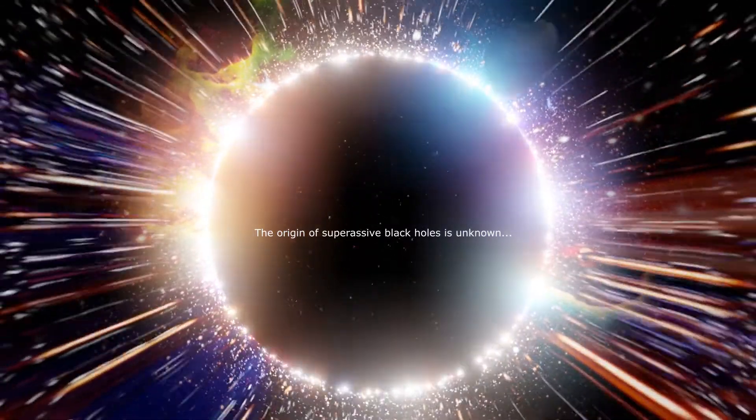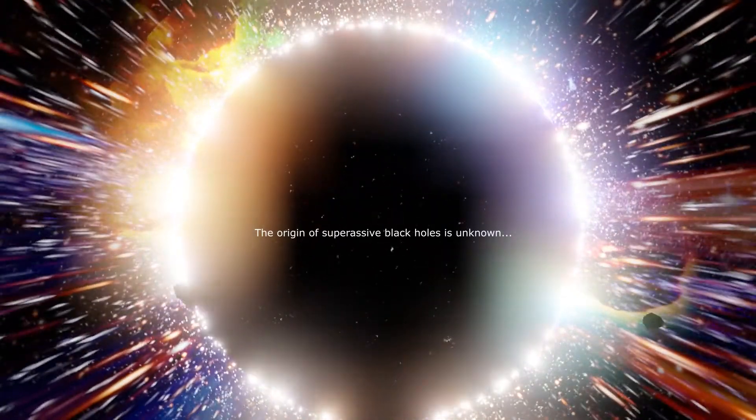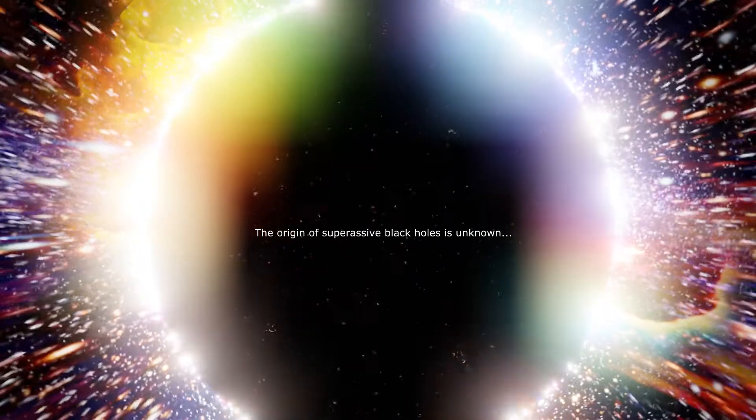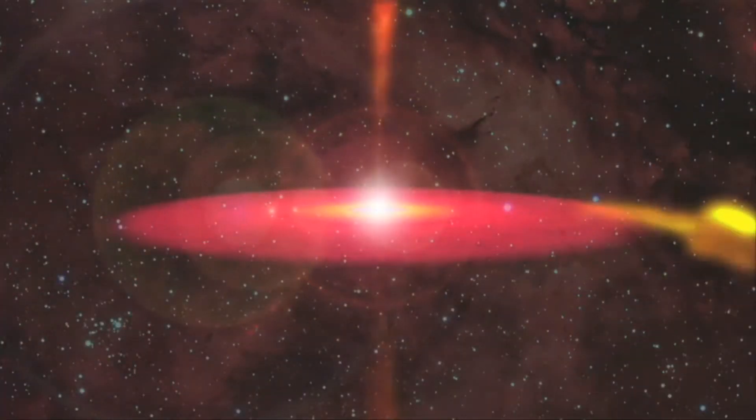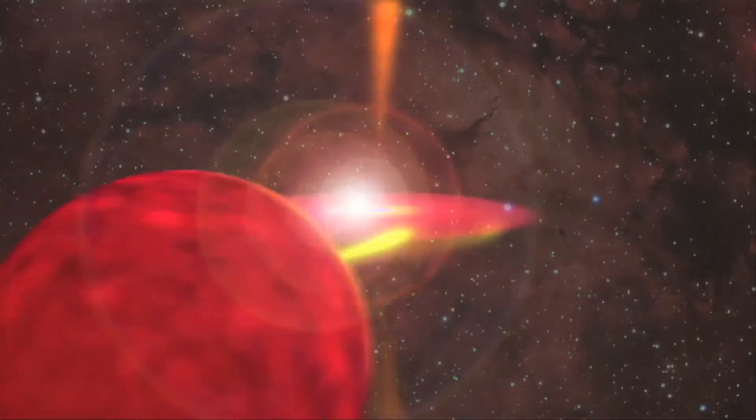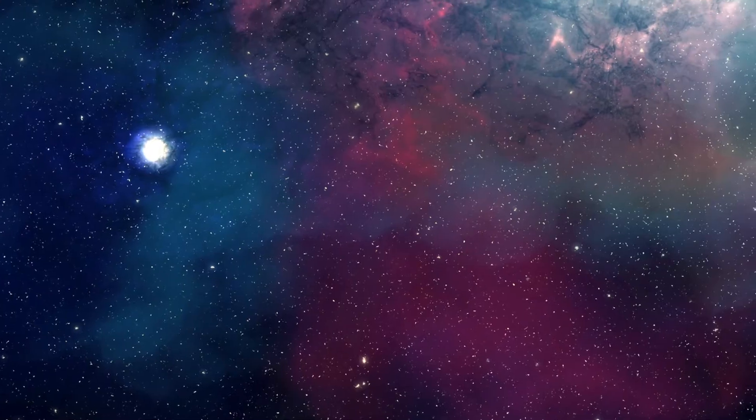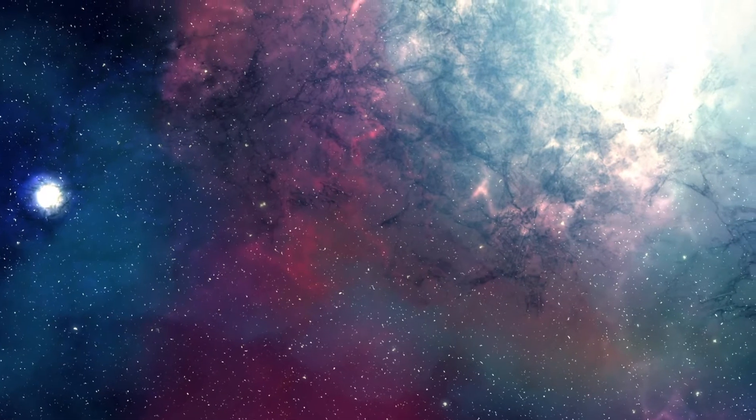The origin of supermassive black holes remains an open problem to researchers. Astrophysicists agree that black holes can grow by accretion of matter and by merging with other black holes. There are several hypotheses about the formation mechanisms and initial masses of the progenitors or seeds of supermassive black holes. One hypothesis is that the seeds are black holes of tens or perhaps hundreds of solar masses that are left behind by the explosions of massive stars and grow by accretion of matter.